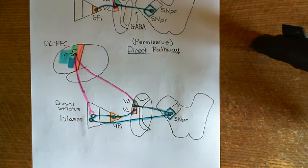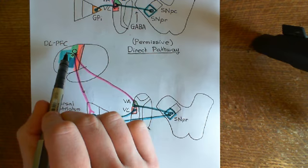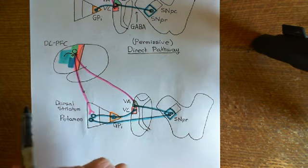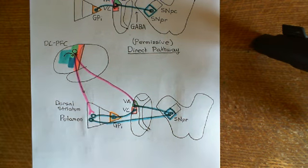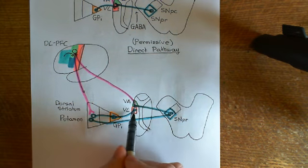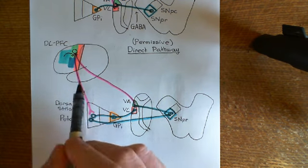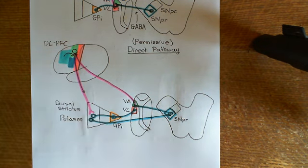At the same time, you're also going to activate the indirect pathway — the pathway that potentiates the inactivation of other portions of the ventral anterior and ventral lateral thalamic nuclei, making absolutely sure that only the motor plan you want to get through actually goes through. We'll discuss the indirect pathway in the next video.